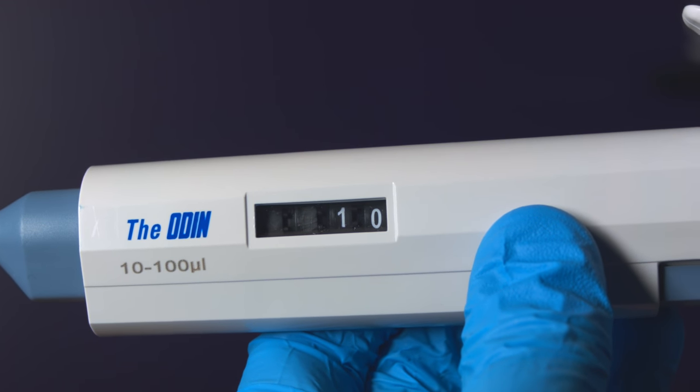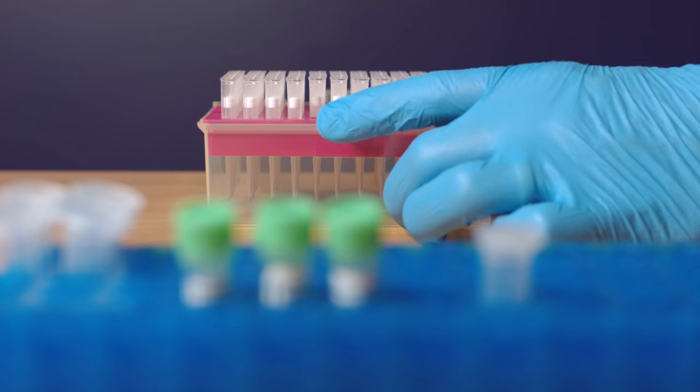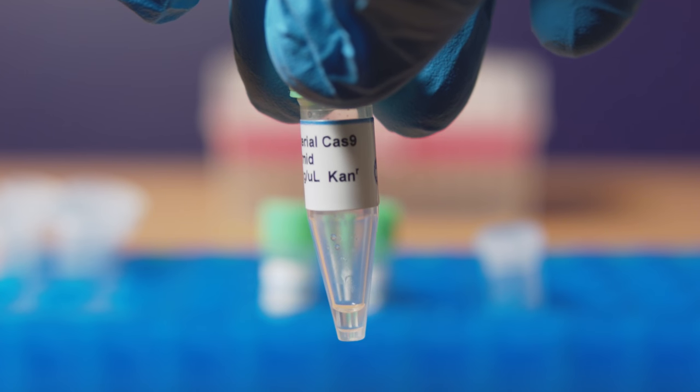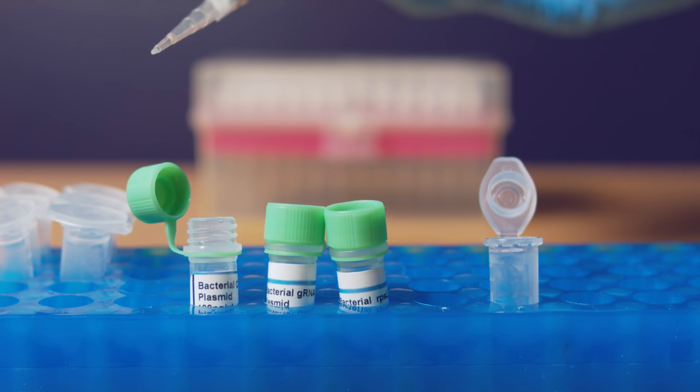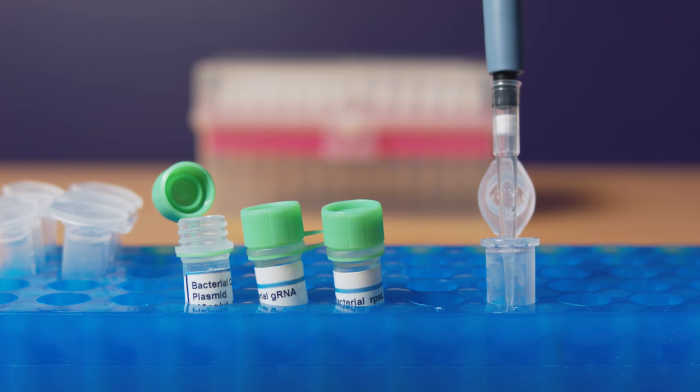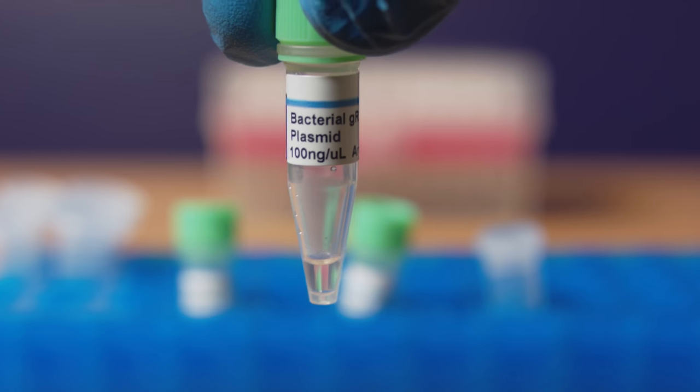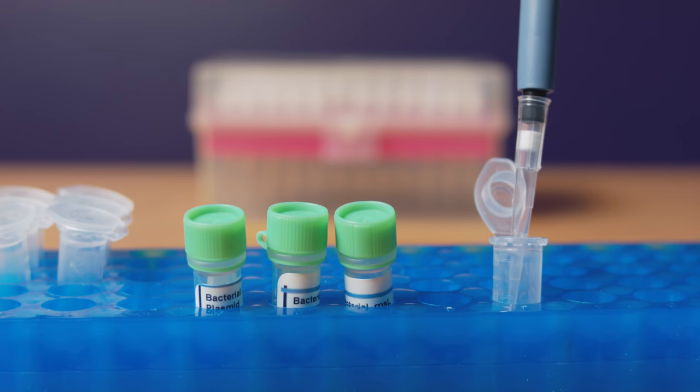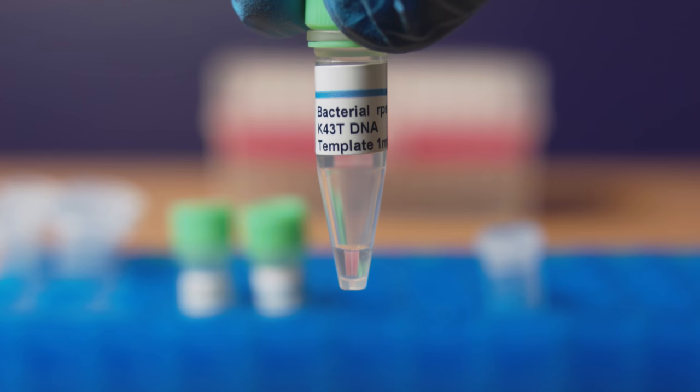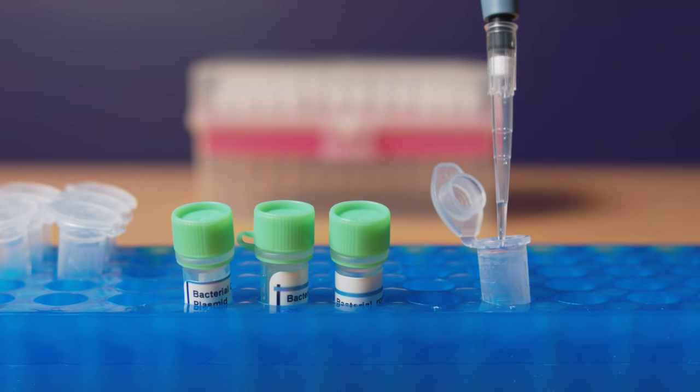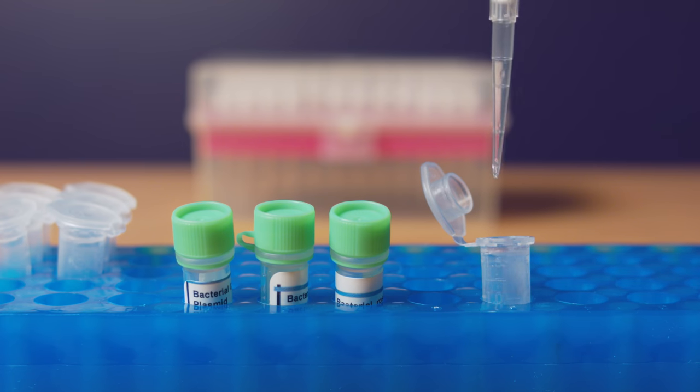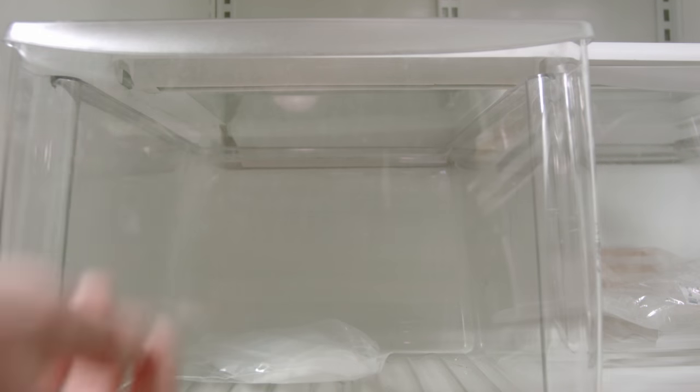Set the pipette to 10 microliters and add a new tip. Grab the tube with the Cas9 plasmid, pipette out 10 microliters, and add it into your E. coli competent cell mixture. Then 10 microliters from the guide RNA tube, and a final 10 from the template DNA tube. Use a new pipette tip for each. Put the E. coli mix in the fridge for 30 minutes.